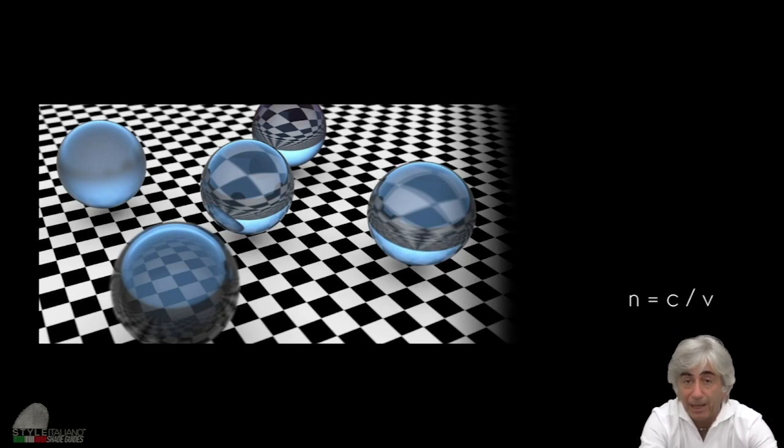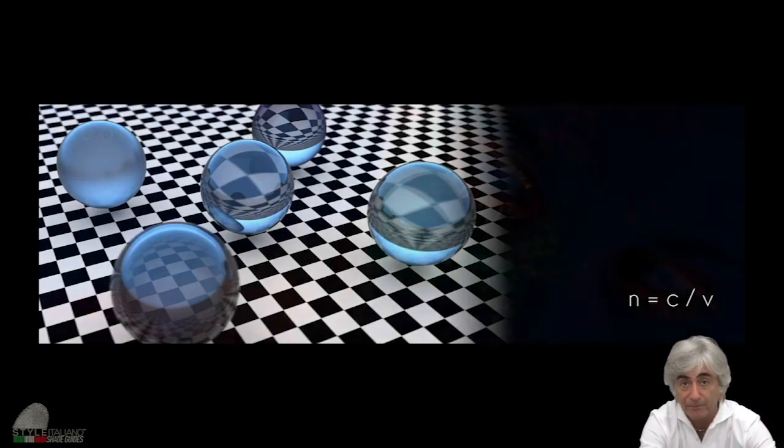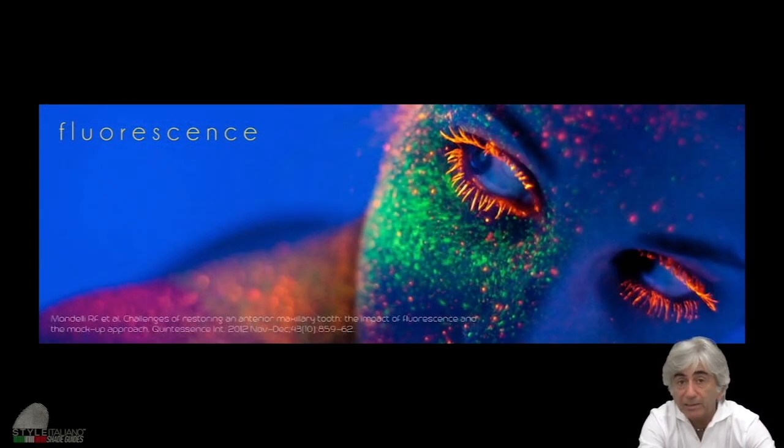What is important is the balance between the opaque and translucent part of your restorations. What about the fluorescence? It's another important tool. The fluorescence is responsible for the metamerism, that is phenomenal for which every single object can appear in different color under different light sources.